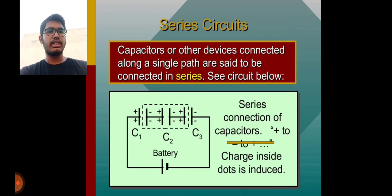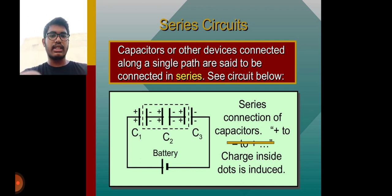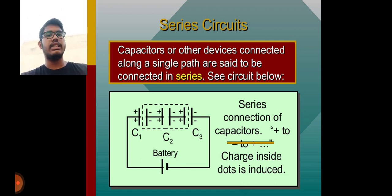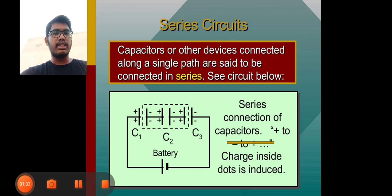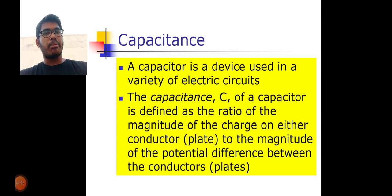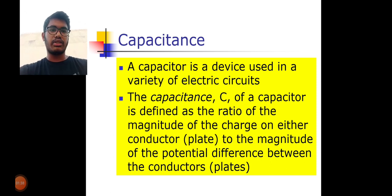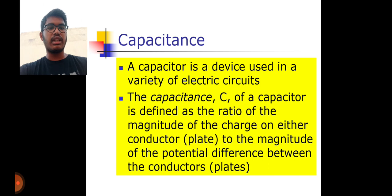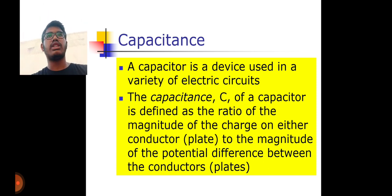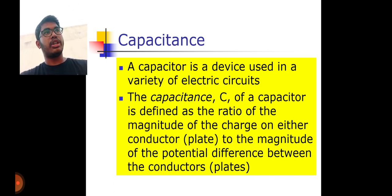Our topic is capacitors. Capacitors are devices that store electrical energy. They can be connected along a single path in series. Capacitance is a device used in a variety of electrical circuits. Capacitance is defined as the ratio of the magnitude of the charge on either conductor to the magnitude of the potential difference across the conductor. It defines the ratio of charge to potential difference.